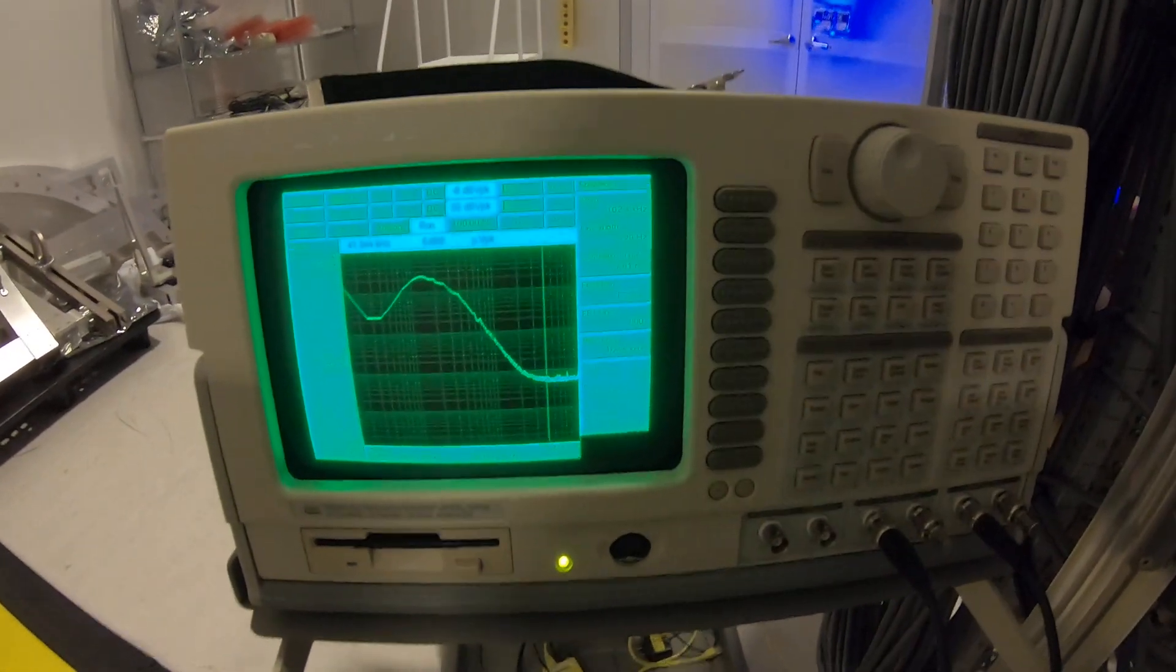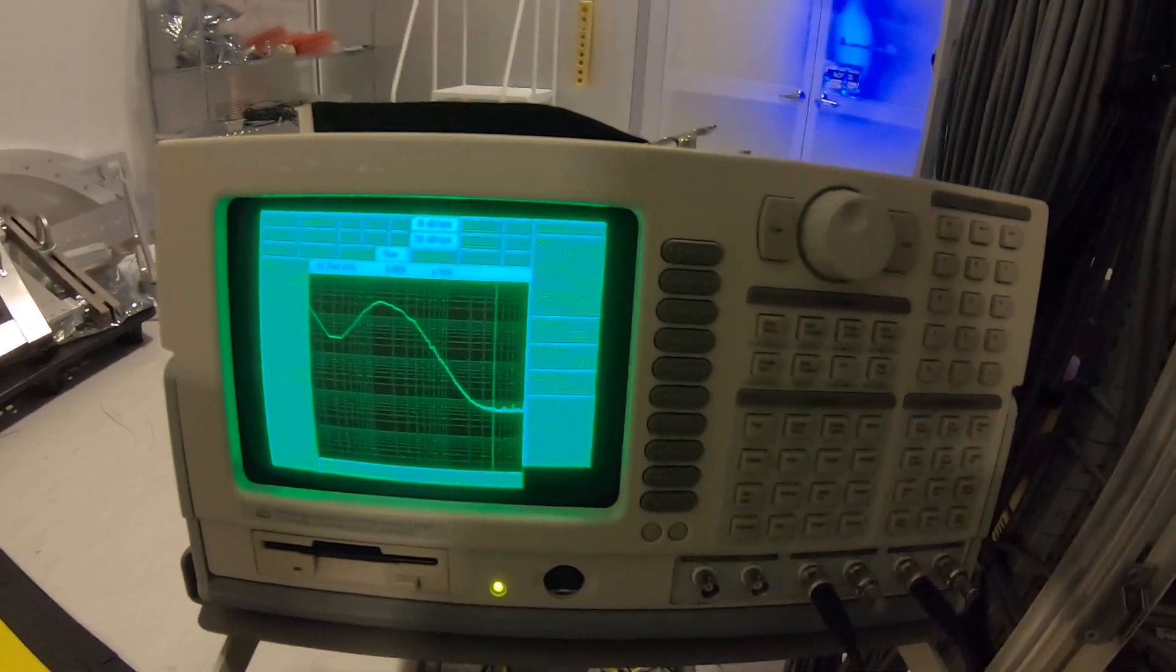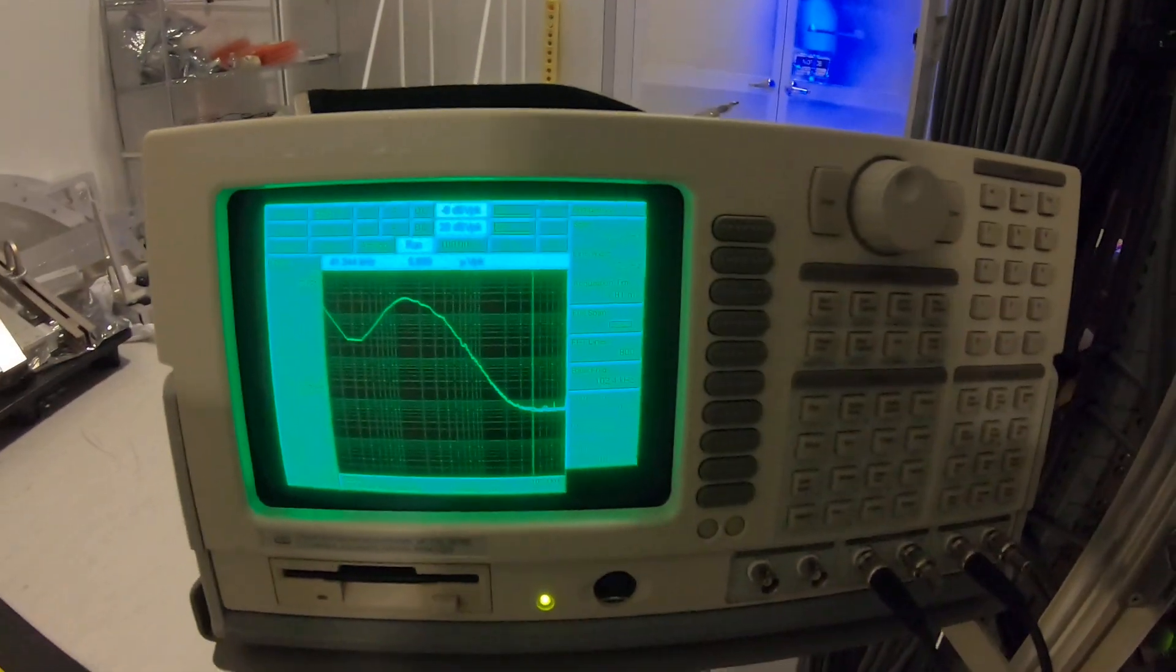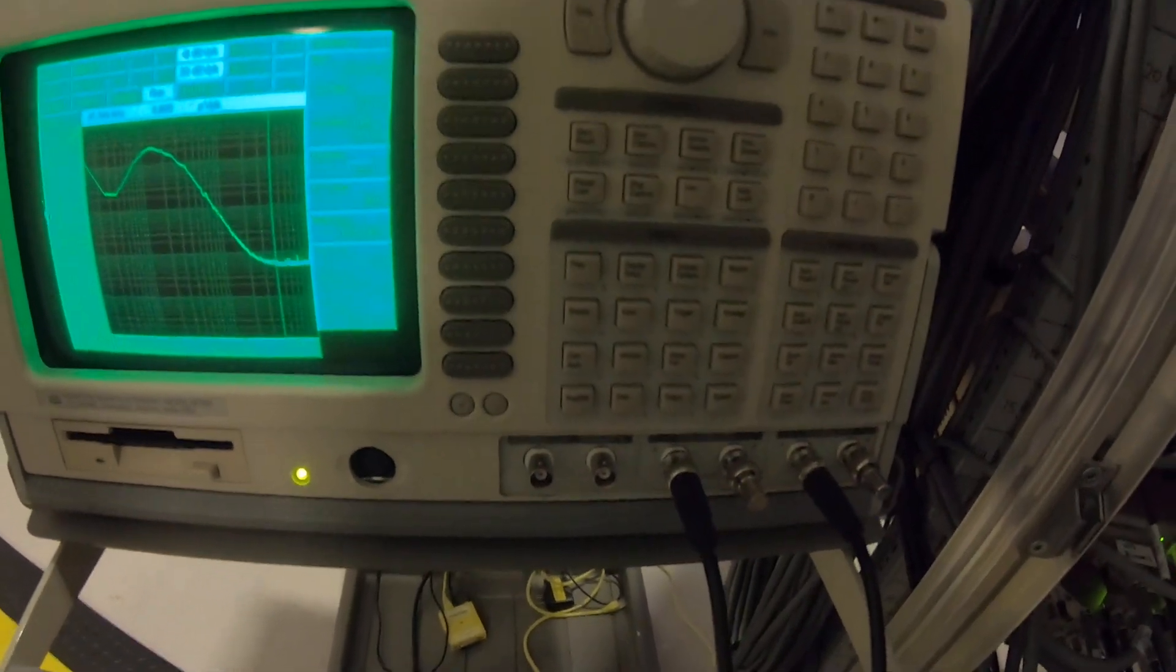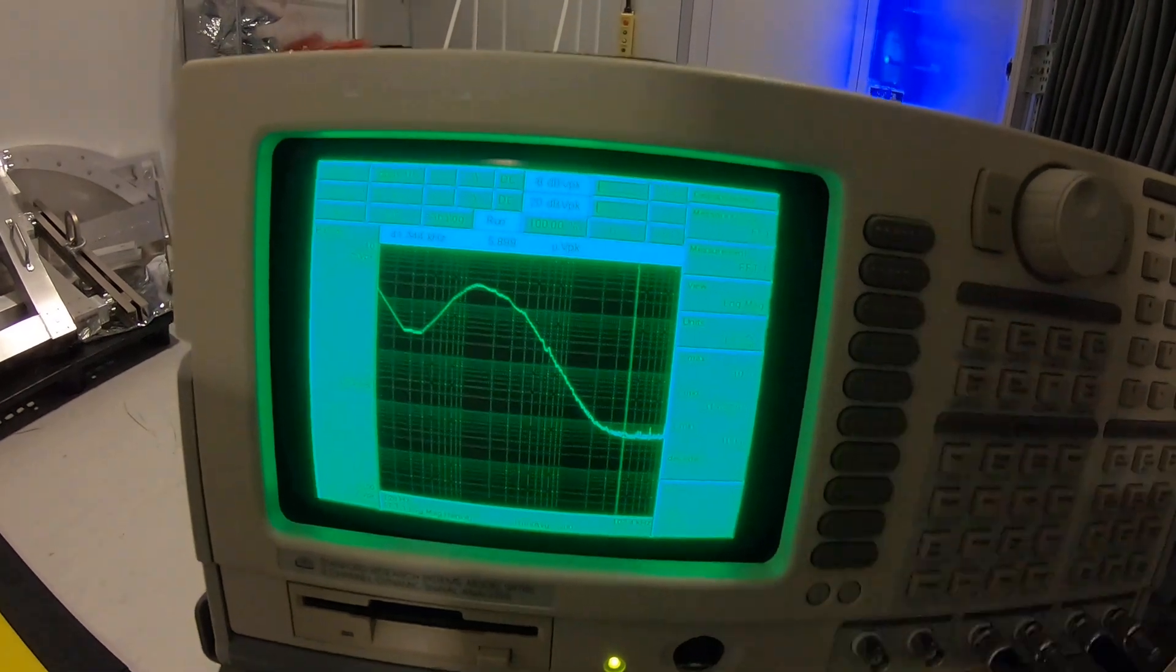So I finally figured out how to take coherence measurements between the two channels with SR785. Right now we have our two channels we want to check plugged in and right now we are doing a 850.